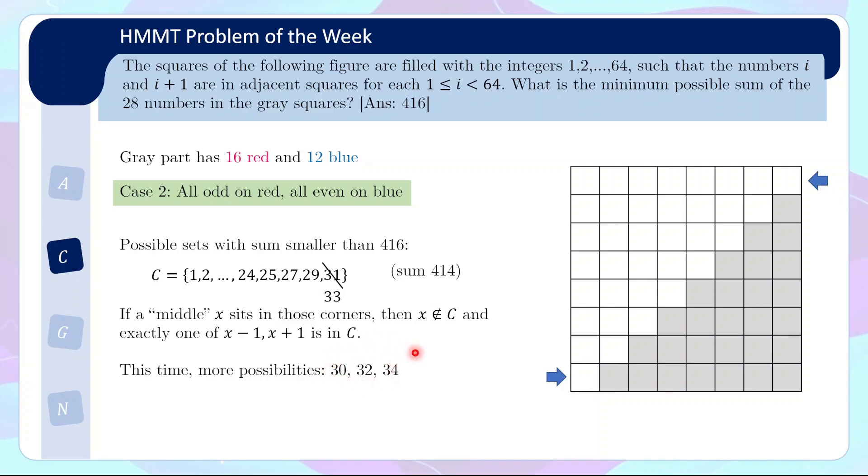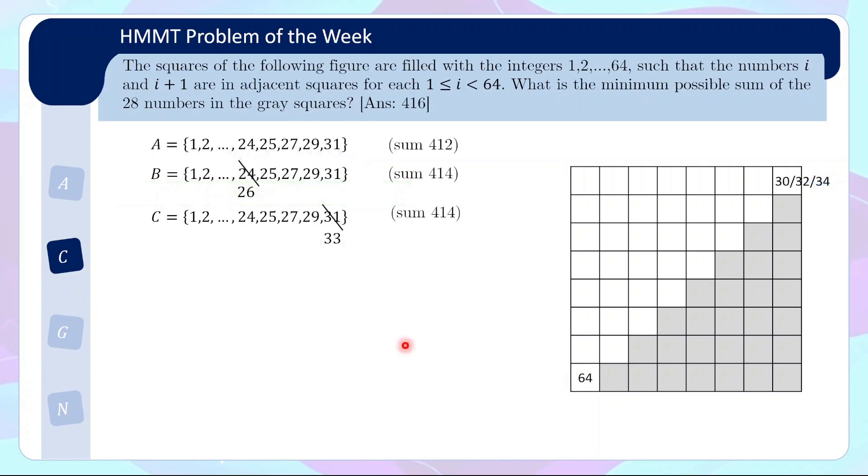But actually, we cannot put both corners with these candidates. Because for example, if we put 30 here and we put 34 here, we cannot possibly travel from 30 to 34 through such a wide distance. So 30, in the shortest possible way to reach the other corner, you have to have gone through like 1, 2, 3, 4, 5, 6, 7, 8, 9, 10, 11, 12, 13, 14 numbers. So this corner and this corner needs to have numbers that are at least a difference of 14 apart. So we cannot put 30 and 34 here. So similarly, one of the corners will have one of these options, but the other corner must be 64.